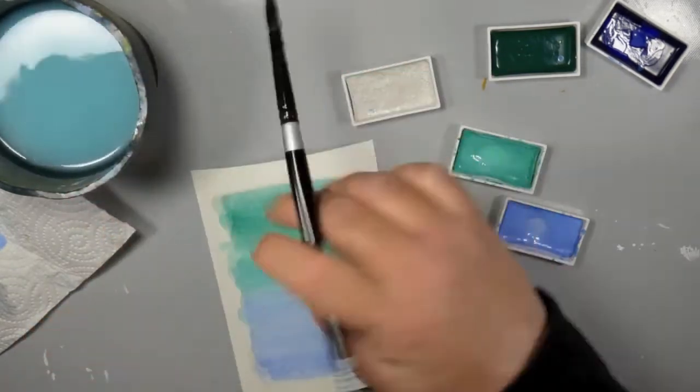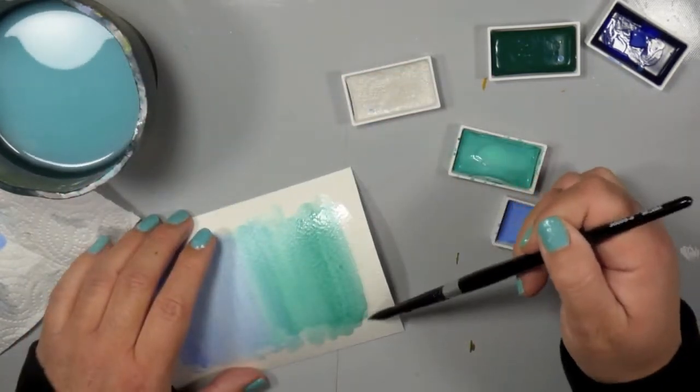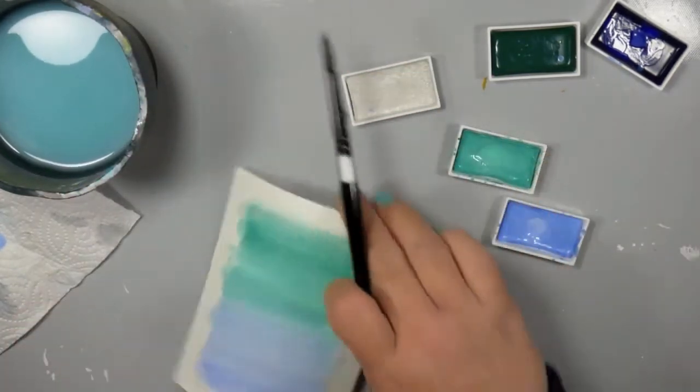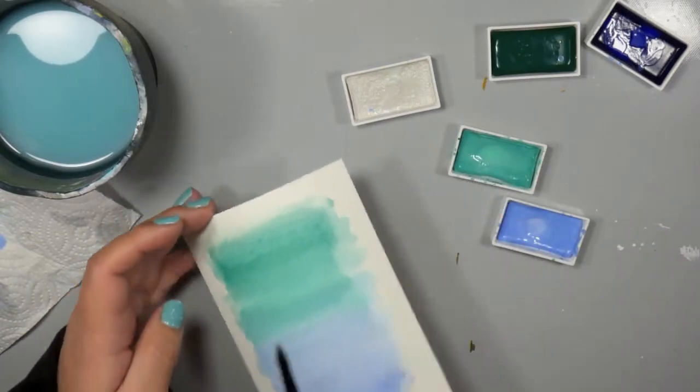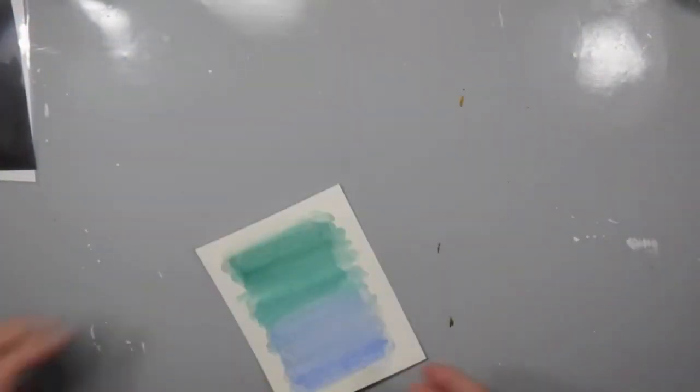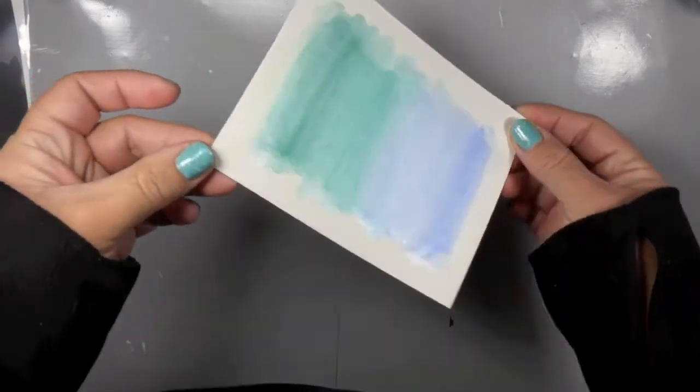So I'm just adding a light wash. I had let that completely dry, that first layer, and I did take a heat gun to it. I like to speed that up. And then I added a light wash of that pearlescent color on top. And it's just so pretty. I love that sheen on it.